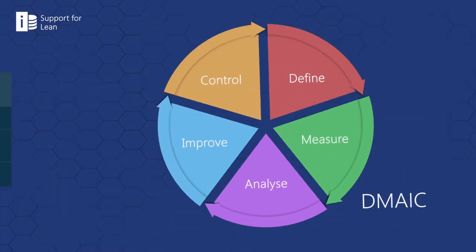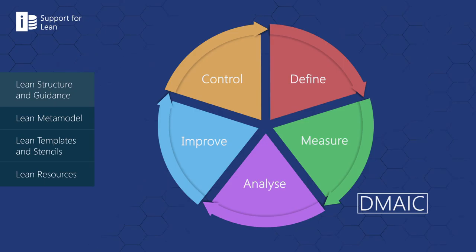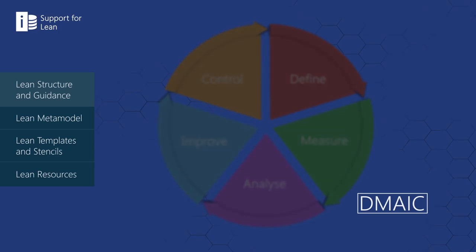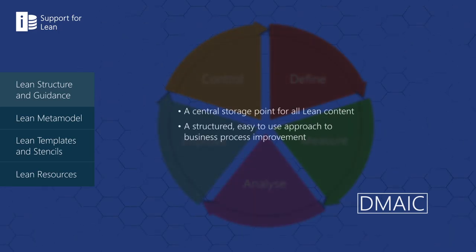iServer's lean repository is structured around the DMAIC process — define, measure, analyze, improve, and control — and allows users to choose the proper lean technique to use at each stage of the process. This provides a central storage point for all lean content and a structured, easy-to-use approach to business process improvement.